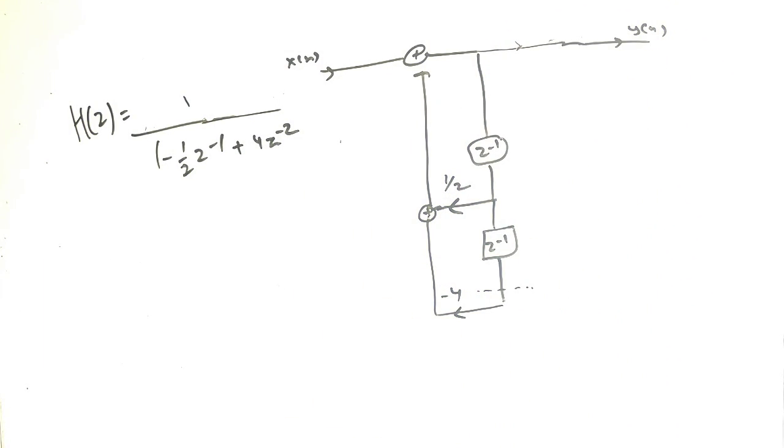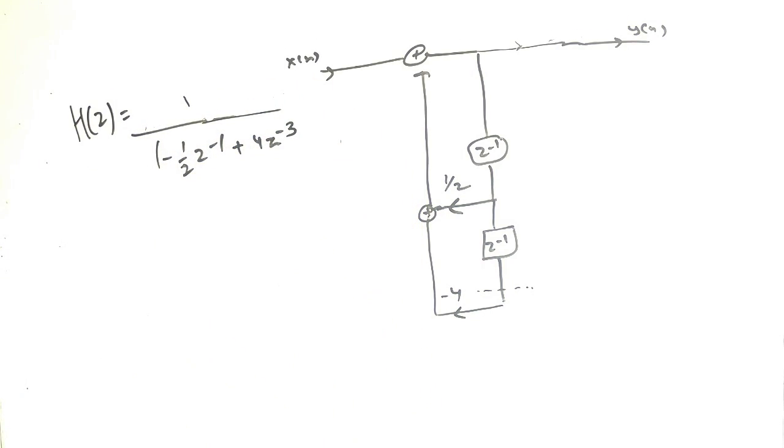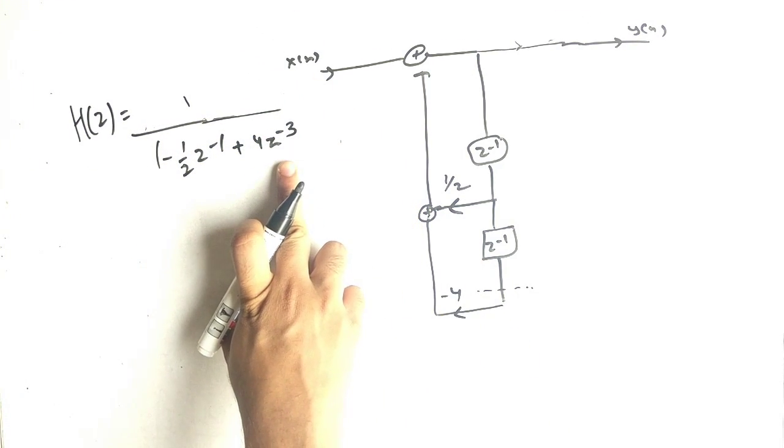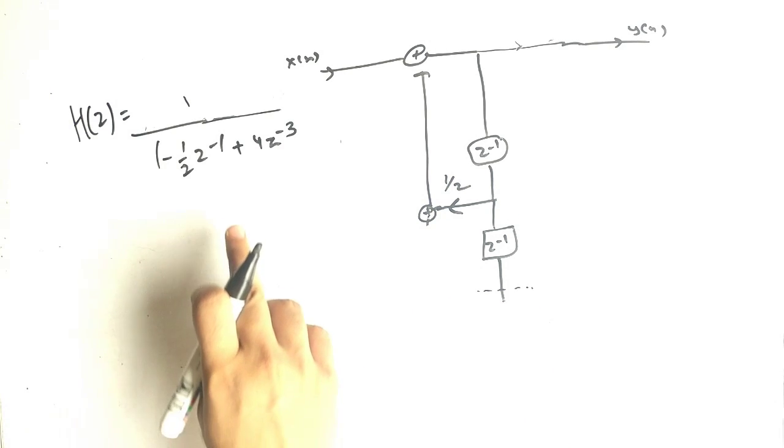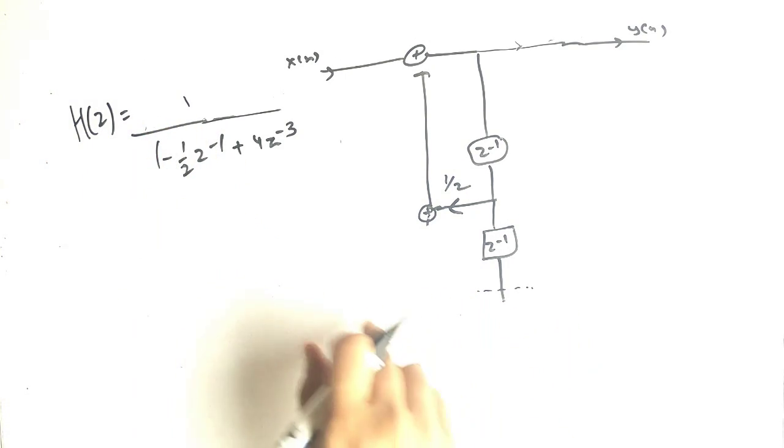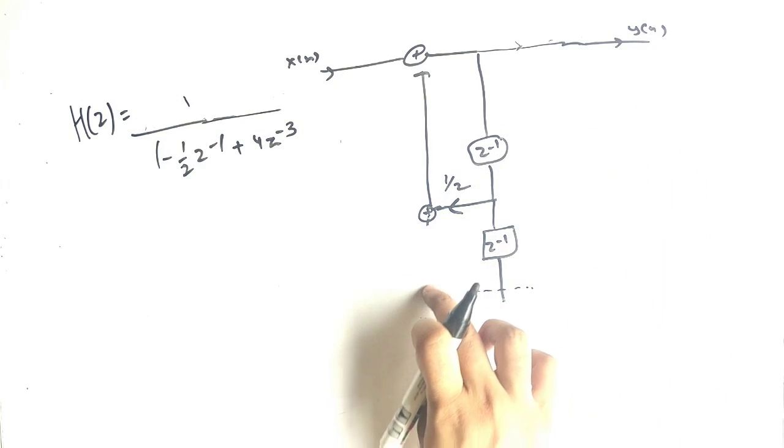Alright, now my question is what if I say this delay is z raise to minus 3? If it is z raise to minus 3, there is no term in z raise to minus 2. We have to leave blank for both. There is no term for z raise to minus 2 in zero, there is no z raise to minus 2 term for pole.